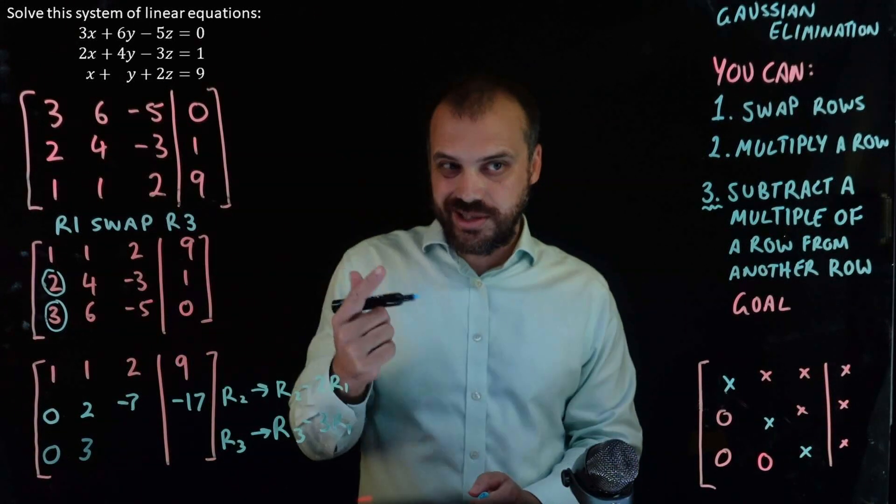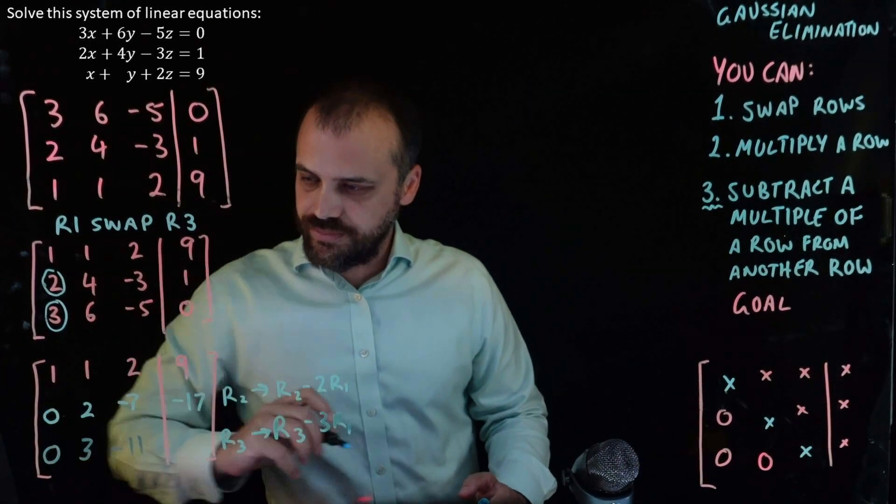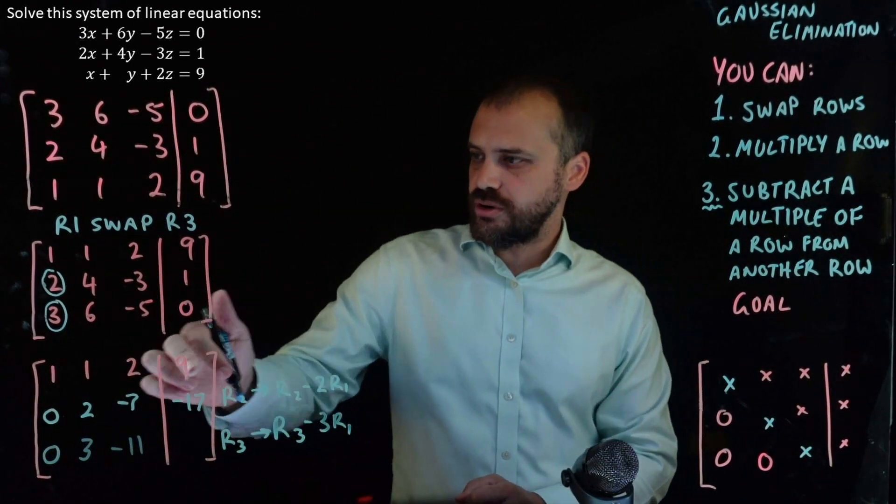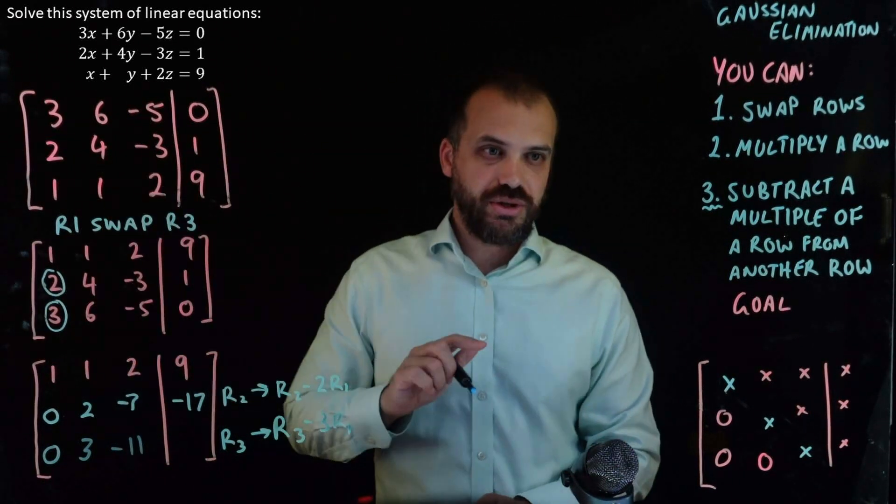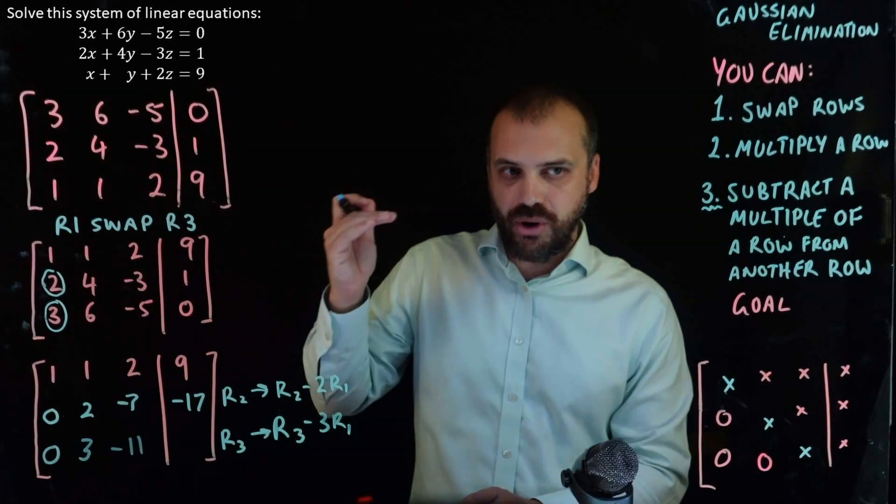Negative five minus three times two, six. Negative five minus six is negative 11. And then we have zero minus three times nine, which is 27. So, minus 27.